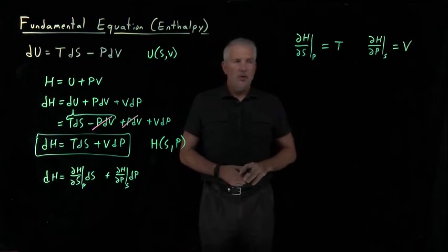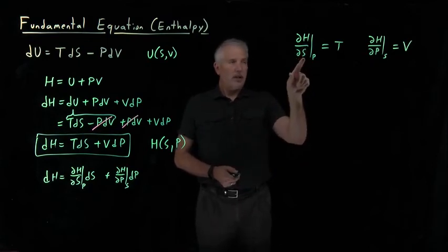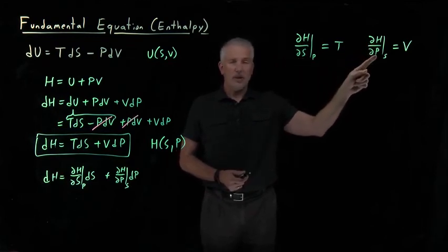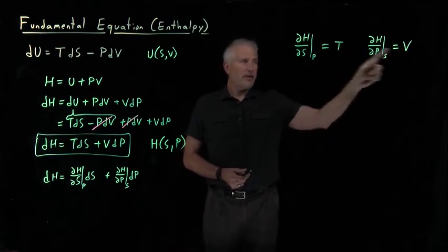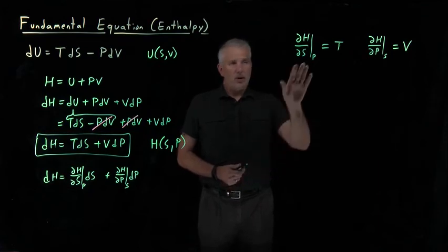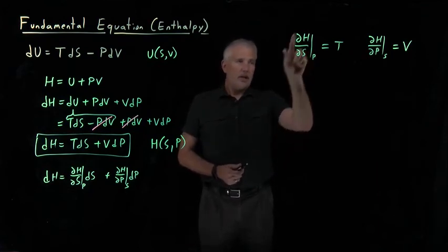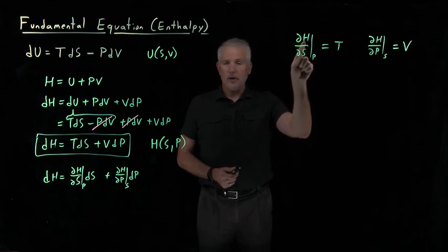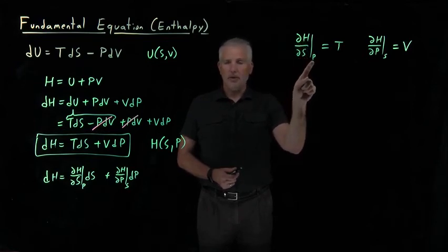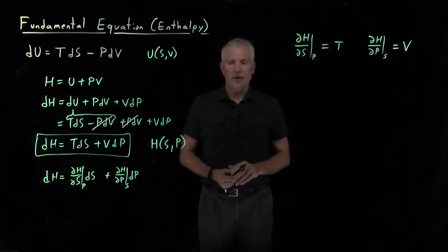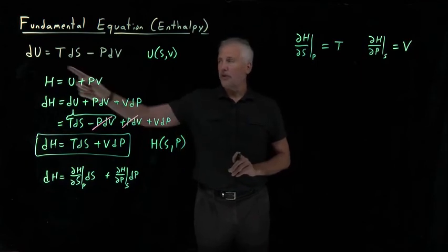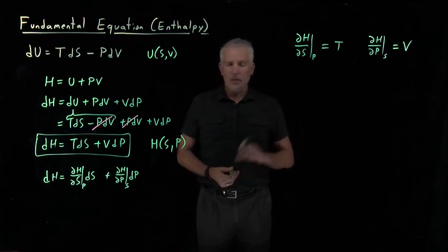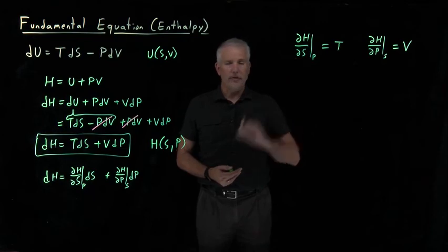So here are two derivatives we haven't seen before: how quickly does the enthalpy change when I change the entropy while holding the pressure constant, and how quickly does the enthalpy change when I change the pressure while holding the entropy constant? Those have particularly simple answers. You can imagine how many thermodynamic derivatives of this type there are — a derivative of some thermodynamic property with respect to another while holding a third constant. There are literally hundreds of these derivatives we could write down, and this gives you a taste of how we determine them when needed.